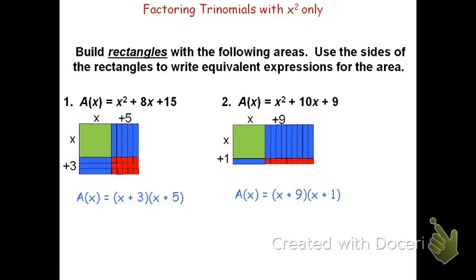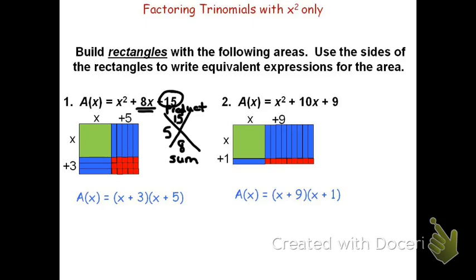There are other ways to do this. We could simplify this process using what we call a diamond problem approach. For diamond problems, we need to find a way to make the last number by multiplication — the 15 or the 9 depending on the example. In the diamond problem, the top is called the product, meaning multiplication. So for the first problem, the value of c is 15, and I need two numbers that multiply to be 15. The bottom of the diamond is called the sum — I need two numbers that add to be 8. Two numbers that multiply to 15 and add to 8 would be 5 and 3.